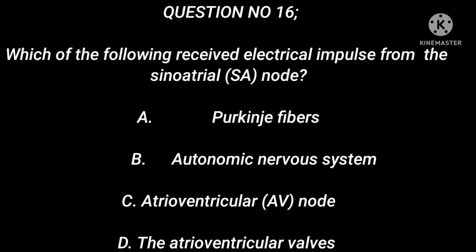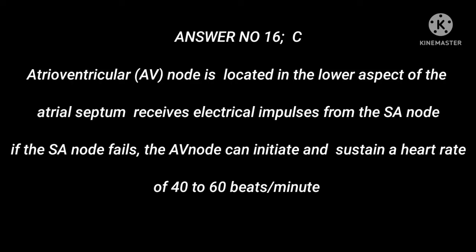Question number 16: Which of the following receives electrical impulses from the sinoatrial (SA) node? A. Purkinje fibers. B. Autonomic nervous system. C. Atrioventricular node. D. The atrioventricular valves. Answer number 16: C. The atrioventricular (AV) node is located in the lower aspect of the atrial septum and receives electrical impulses from the SA node. If the SA node fails, the AV node can initiate and sustain a heart rate of 40 to 60 beats per minute.